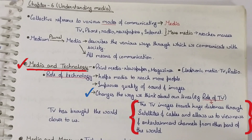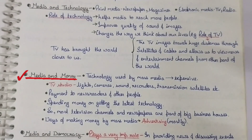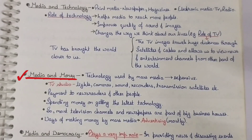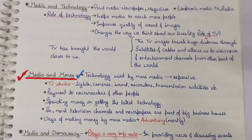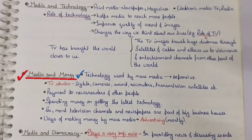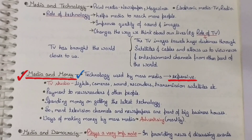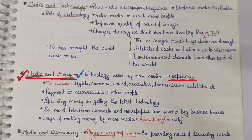Now the next point is media and money. We have studied what is related to media and technology. Now we will study what is related to media and money. Technology used by mass media is expensive — the costs are high. Newspapers, internet — all of these make mass media expensive.